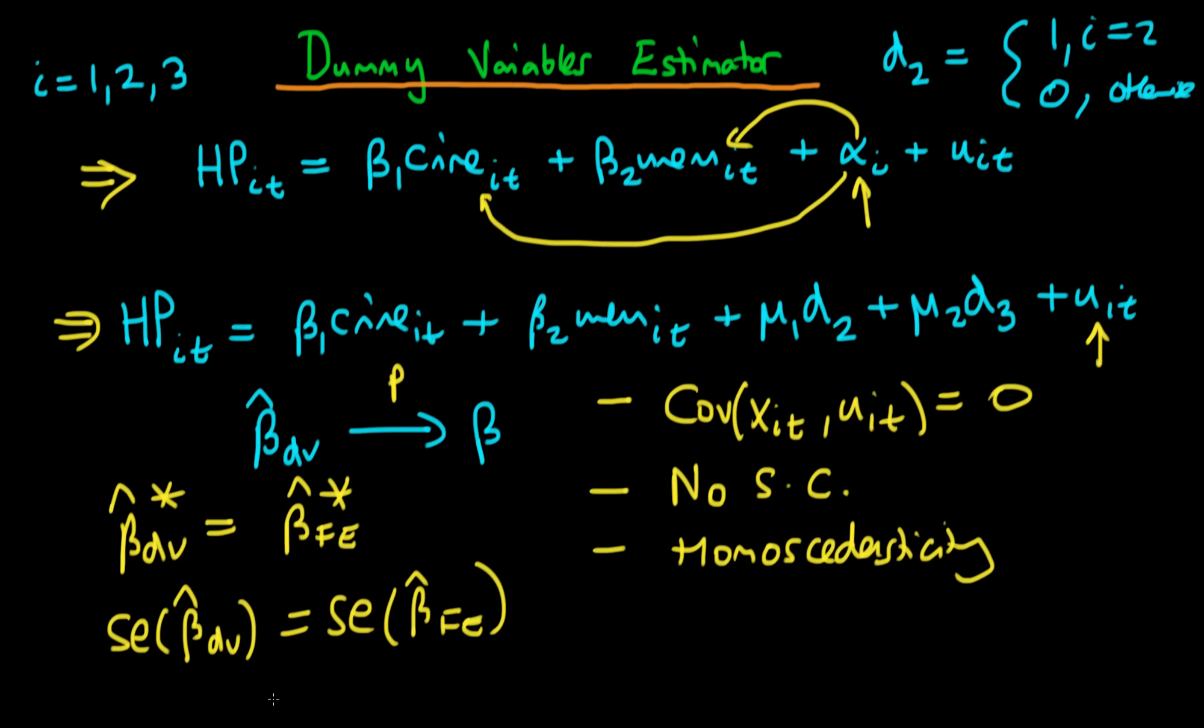So why have I bothered to talk about dummy variables estimator if it's just the same as fixed effects estimators? Well the reason is that essentially one of the pros of dummy variables estimation is that it explicitly allows us to capture this alpha i, this unobserved heterogeneity for each of the different cities. So we can actually estimate